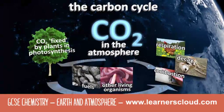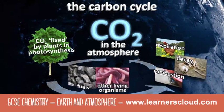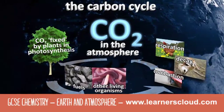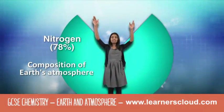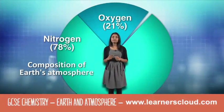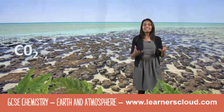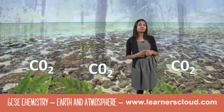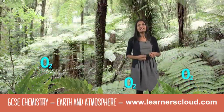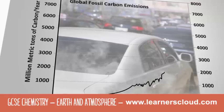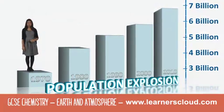The carbon cycle describes the movement of carbon from living organisms into the atmosphere. The atmosphere is 78% nitrogen, 21% oxygen, and small amounts of carbon dioxide. As carbon dioxide was taken in by the plants, oxygen was released as a by-product.